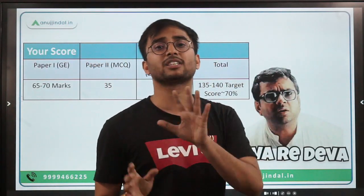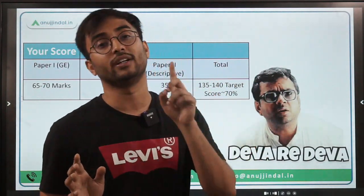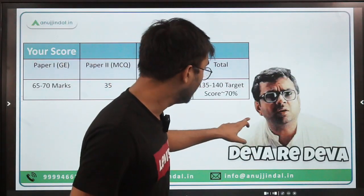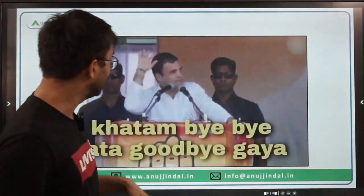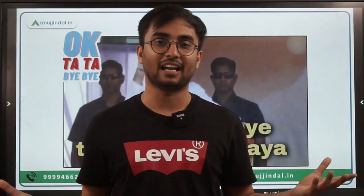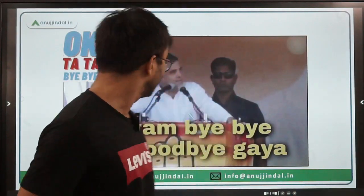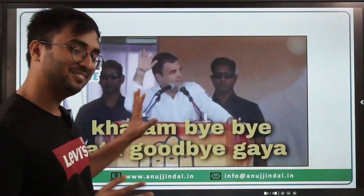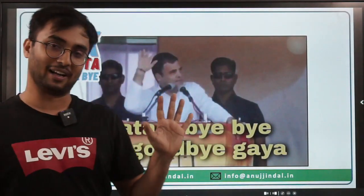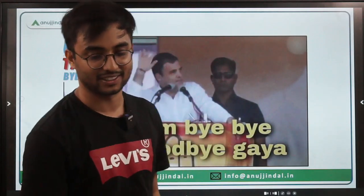According to your strengths - whether it is ESI, ARD, or General English - you can figure out your subject-specific marks, but from a minimum and maximum perspective the target is 130 to 140 marks. See you next time.